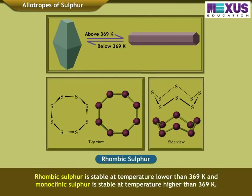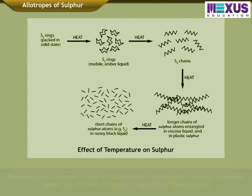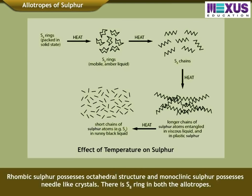Rhombic Sulphur is stable at temperatures lower than 369 Kelvin, and monoclinic Sulphur is stable at temperatures higher than 369 Kelvin. Rhombic Sulphur possesses an octahedral structure, and monoclinic Sulphur possesses needle-like crystals. There is an S8 ring in both the allotropes.